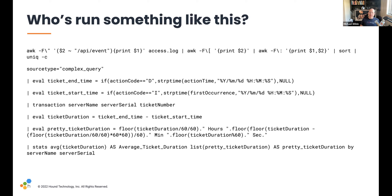Aside from complex search commands, which are really powerful — like the eval commands that let you do things similar to Honeycomb's derived columns, making brand new fields — or the transaction command in Splunk, which allows you to aggregate events and group them together kind of like we do with traces — how do I even know where to start? That's one of the things I discovered when I came to work at Honeycomb.